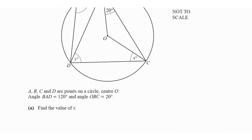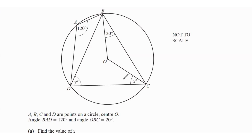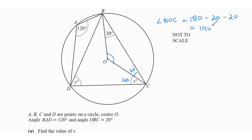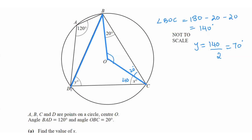Find the value of y. We know angle OBC = 20° and angle OCB = 20°. The angle at the centre BOC = 180° − 20° − 20° = 140°. By the circle theorem, the angle at the centre is twice the angle at the circumference, so y = 140 ÷ 2 = 70°.